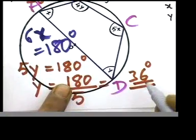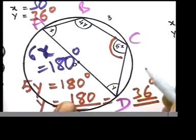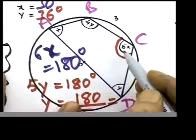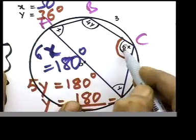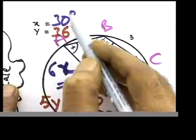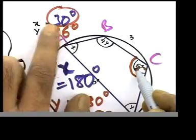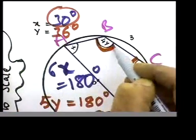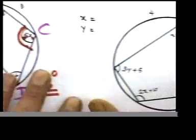If you need to find 5x, multiply 5 by the x value, which is 30 — giving that full angle. Similarly, if you need to find 4y, it's 4 times y, and y equals 36.